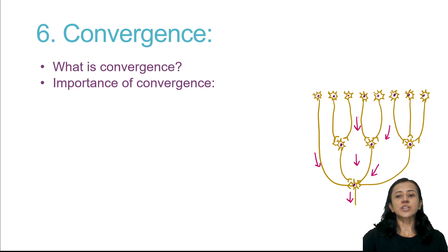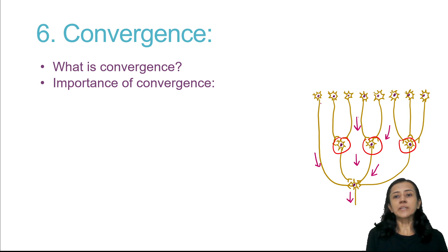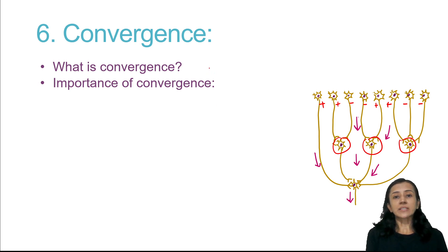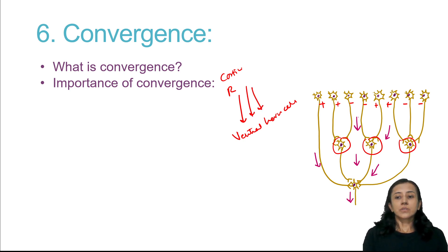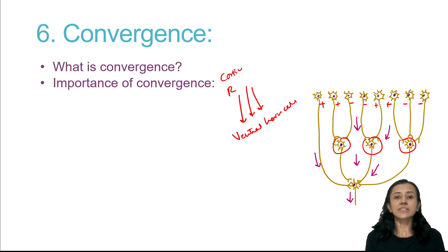Sixth property is convergence — a large number of presynaptic neurons have synaptic connections with one postsynaptic neuron. Some presynaptic neurons have excitatory neurotransmitters, some have inhibitory, and all these effects are summated. For example, various tracts — corticospinal, reticulospinal, rubrospinal — all converge on ventral horn cells. The summated action determines the activity of the neuron.